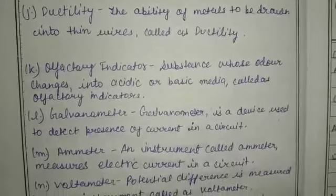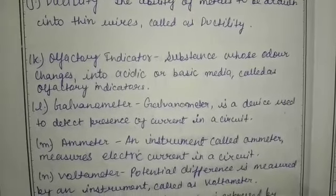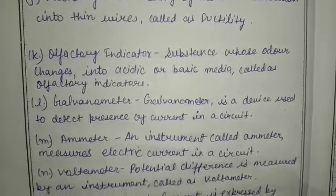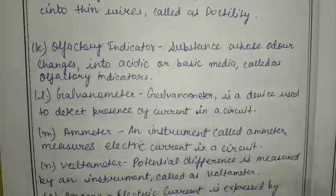What is an olfactory indicator? A substance whose odor changes in acidic and basic media is known as an olfactory indicator.